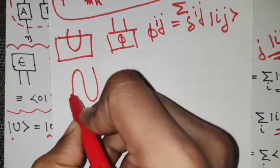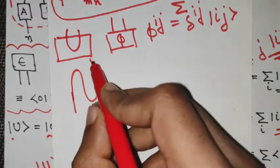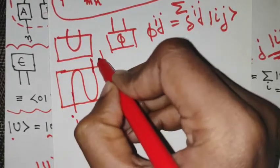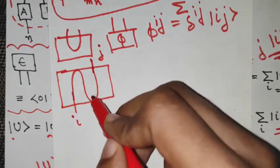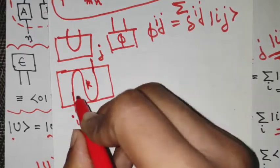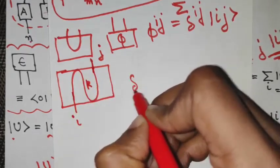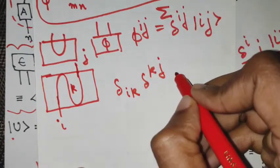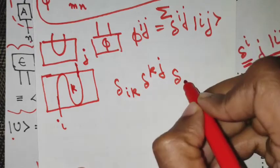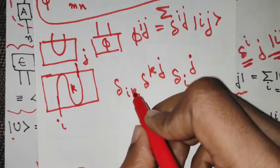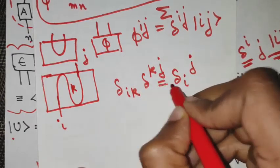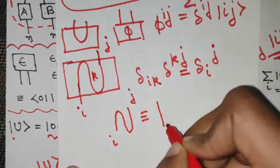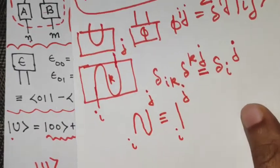Suppose I have a composition of two wire segments. If I box this entire thing, there is something coming in and something going out. Inserting index k, this part can be written as δ^i_k, this part as δ^k_j, and together after the summation they give δ^i_j. This is like raising the index from k to j, so the entire composition is equivalent to a single δ^i_j — this is an important property.